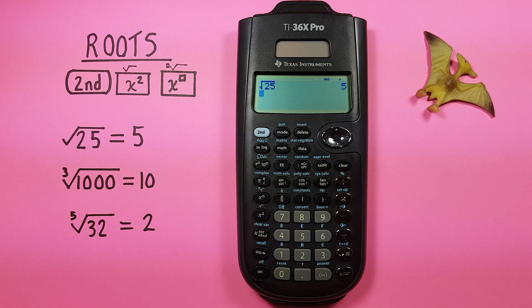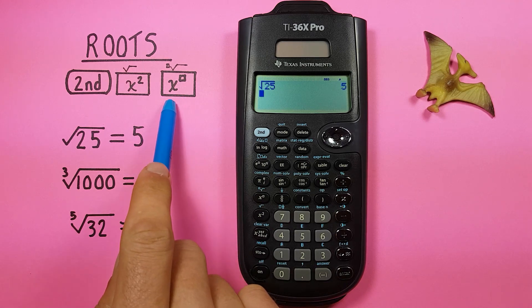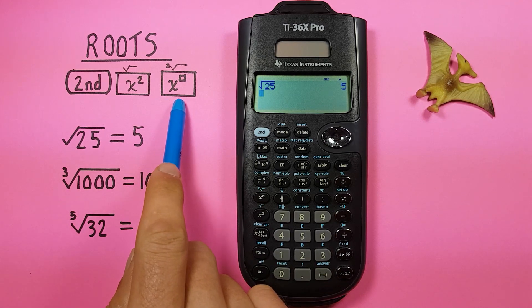And if you want to find roots that aren't square roots you can use this key here, the second function of this exponent key.